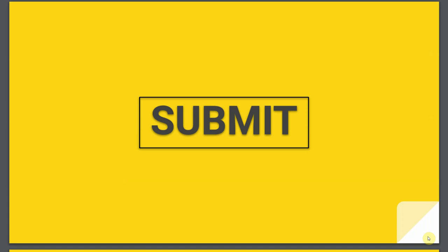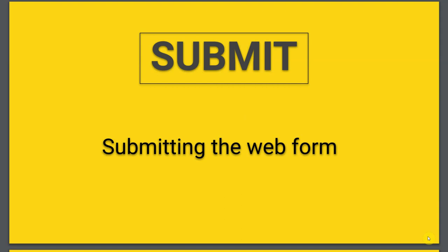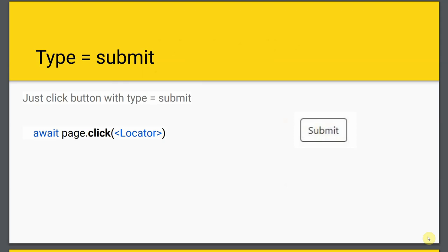Now we're going to change gears. What we've seen was about setting values on web forms - now we're going to look at the submission of web forms. The first part is how you actually submit the web form: there'll be a button with a type of submit. The label can be whatever you want, but if you look in the HTML you'll see its type is submit. As with all buttons, you just need to do a page.click and that will trigger the web form submit.